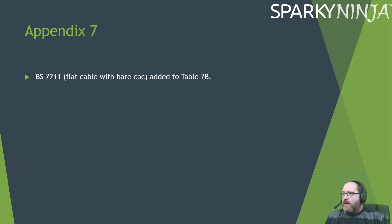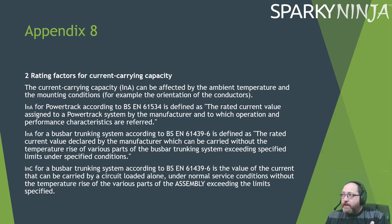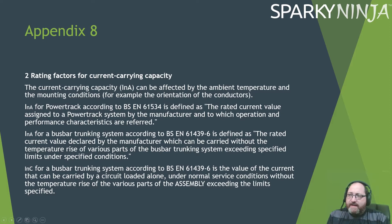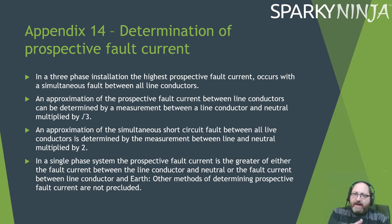Appendix seven has a tiny change — they've added to table 7b to include BS 7211 flat-type cable. Appendix eight has had an additional section for rating factors for current-carrying capacity with regards to busbar trunking systems, adding rating factors for those. If that's relevant to your work, there's a bit more reading to do there.